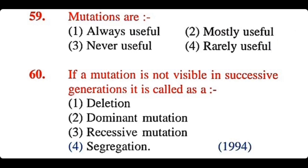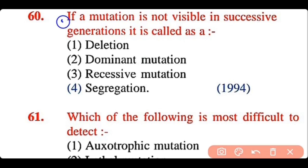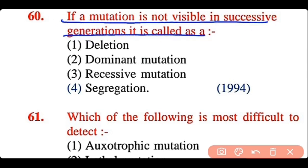Question 60: If a mutation is not visible in successive generations, it is called: a deletion, dominant mutation, recessive mutation, or segregation. The correct answer is option 4. If a mutation is not visible in successive generations, it is called segregation.